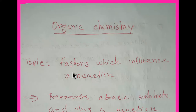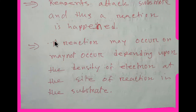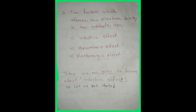Good evening everybody. Today we are going to learn about the factors which influence a reaction. You know that a reagent attacks a substrate and thus a reaction happens. A reaction may occur or may not occur, depending upon the density of electrons at the site of reaction in the substrate. So it may be a substrate or it may be a reagent.